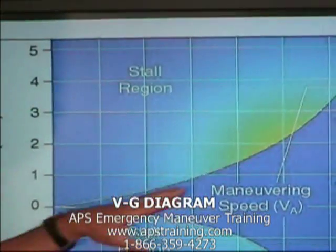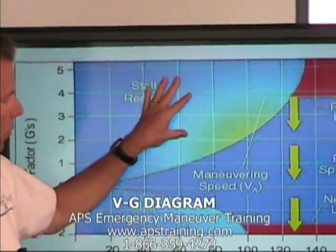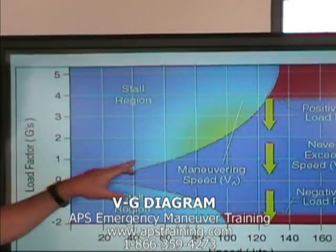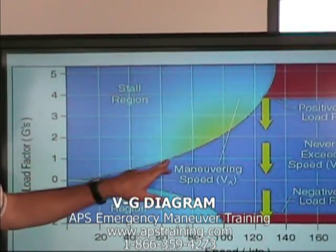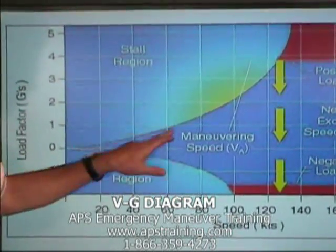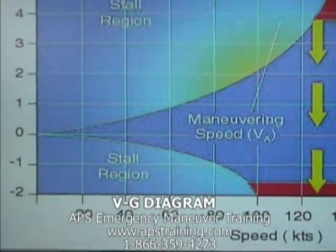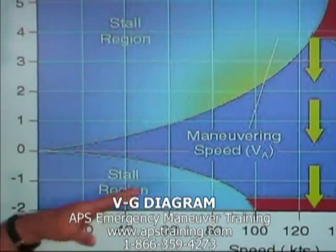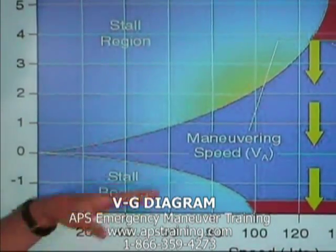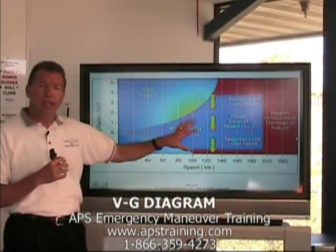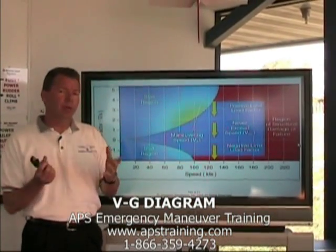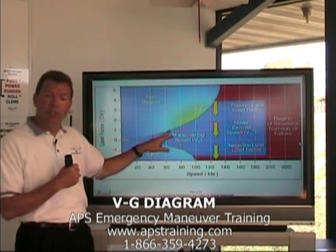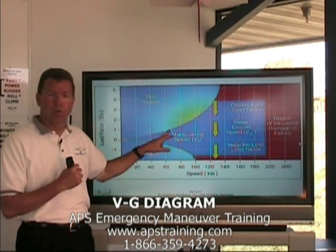This line here is the boundary between normal flight and stalled flight. We can see that the 1G stall speed of this airplane, at the intersection of 1G with the line, is at about 65 knots. So the 1G stall speed of this airplane is 65 knots, and we're going to assume that this is gross weight. In the POH, when they publish the stall speed, it is just this airspeed — the 1G stall speed at gross weight.